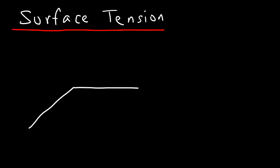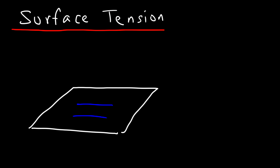Now if you place a small amount of water on a horizontal surface, the water is not going to flatten out. Instead, water forms tiny droplets and on a surface it'll look like a bead. It forms this spherical shape because it wants to minimize the surface area, and surface tension causes that. It works in such a way to minimize the surface area of a fluid, and that's why water tends to form beads if you have very small amounts of water.